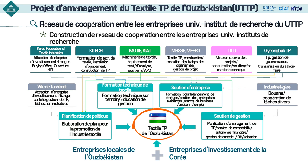C'est le modèle global du réseau du textile Technopark en Ouzbékistan. Il dispose d'un bureau de planification des politiques, d'une salle de formation pour la technique textile, d'une salle de soutien aux entreprises et d'une salle de soutien à la gestion. Le ministère de la stratégie et des finances, le ministère de l'industrie et le KIAT sont en charge, et le Korea Institute of Industrial Technology est en charge de l'administration. L'association coréenne de l'industrie textile et le Kyongbuk Technopark jouent un rôle pour le soutien aux entreprises.